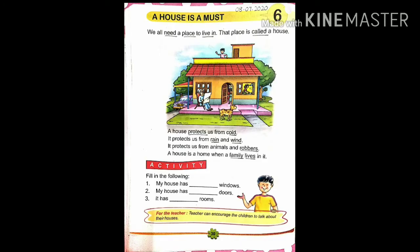As you can see on your screen, this is lesson number 6. The name of the lesson is 'A House is a Must'. Must का मतलब होता है जो चीज़ हमारे लिए बहुत important होती है, उसके लिए हम word यूज़ करते हैं must. तो जो house है बेटा, वो हमारे लिए बहुत important है, बहुत जरूरी है. तो आज हम इसी house के बारे में read करते हैं.